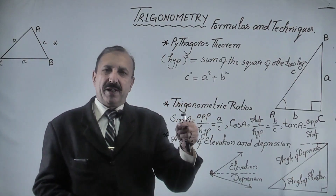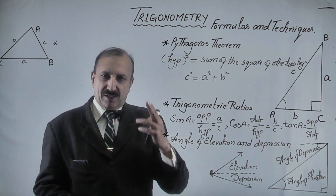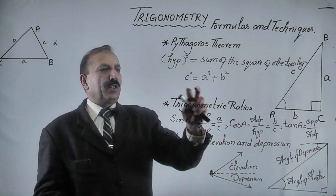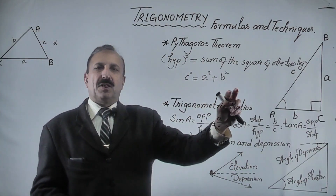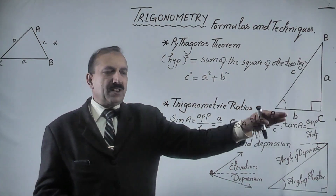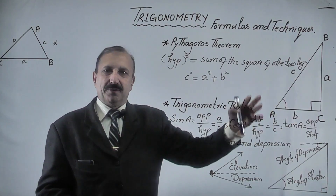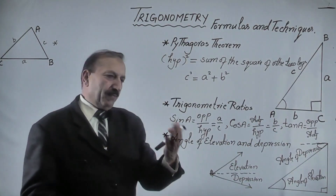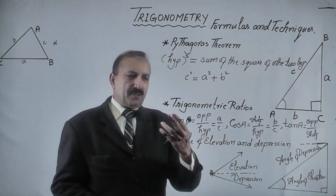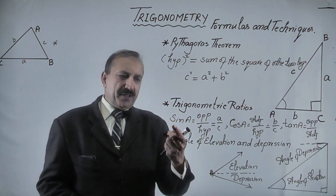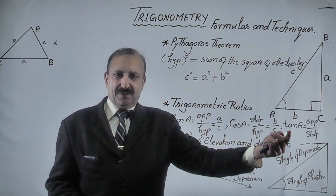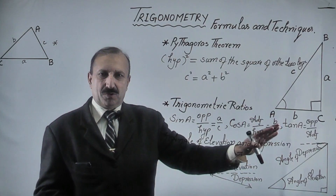Whenever we need to find one side when the two other sides are given, we can take help from Pythagoras theorem. It helps us to find one side when the other two sides are given. But if you look at trigonometric ratios, that is sine, cosine and tangent — these are called trigonometric ratios.